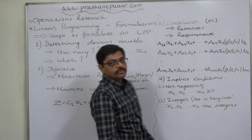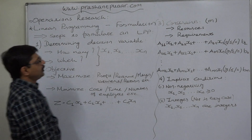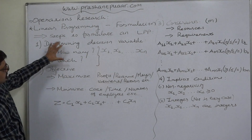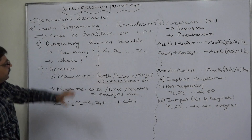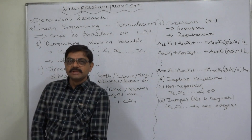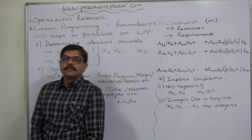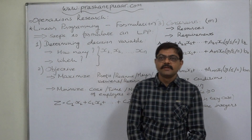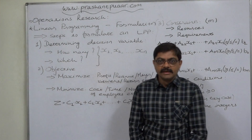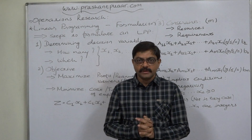In this lecture we are going to discuss the required steps to formulate a linear programming problem. The first step is determining the decision variables — how many there are and which they are. For example, if we have a factory producing two products X and Y using the same raw material, labor, and machinery in different proportions, our problem is: how many units of X and Y should be produced to get maximum profit?